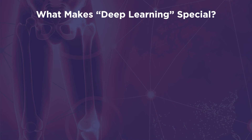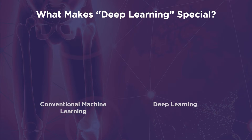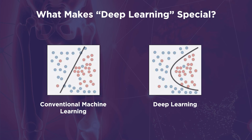Let us now complicate our scenario to better understand what distinguishes deep learning models from other models. If we reposition the red and blue dots as seen on the screen, it would be hard to create a straight line that precisely separates the two colors. However, a nonlinear curve such as the one on the right-hand side can still be used to accomplish this task. This curve is what a deep learning model can predict — it can predict nonlinear equations to label the data at hand. Conventional machine learning models, on the other hand, often produce linear equations with limited uses.